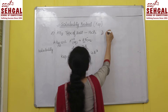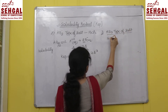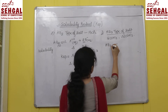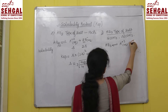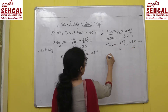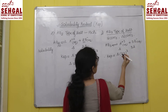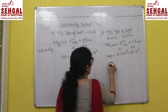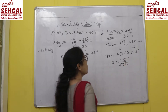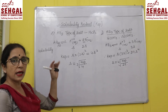For the AB₃ type of sparingly soluble salt — such as ferric hydroxide or aluminium hydroxide — AB₃ ionizes to give A³⁺ plus 3B⁻. Solubilities are S and 3S respectively. K_sp = S × (3S)³ = 27S⁴, and S = ⁴√(K_sp/27). As the type changes, the formula changes proportionately and you can derive them yourself.